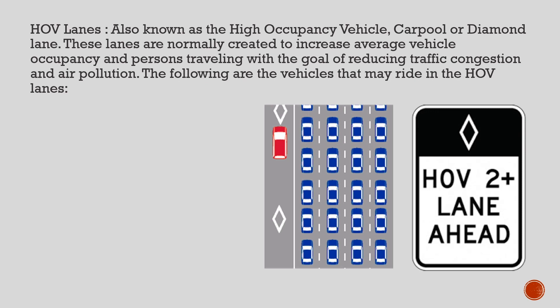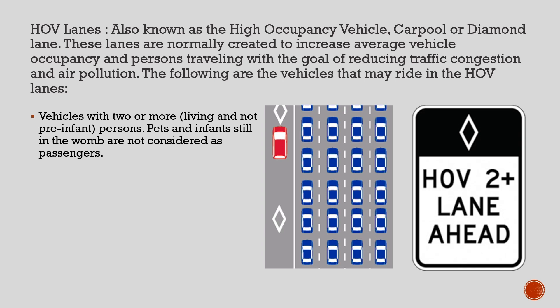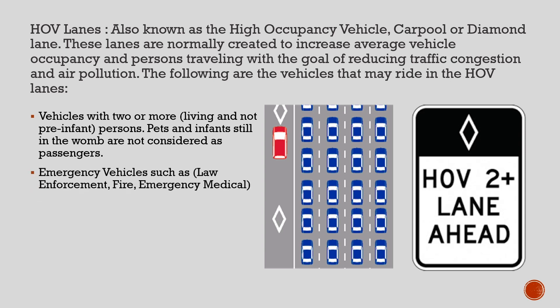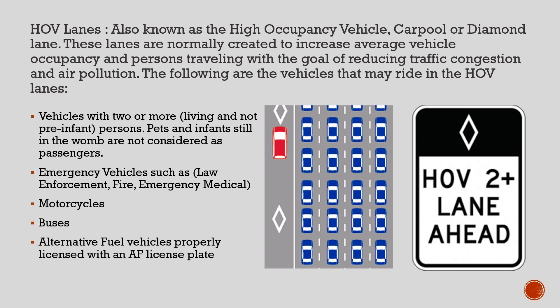HOV lanes, also known as High Occupancy Vehicle, Carpool, or Diamond Lanes, are normally created to increase average vehicle occupancy and reduce traffic congestion and air pollution. Vehicles that may ride in the HOV lanes include: vehicles with two or more persons (not including pets or infants still in the womb), emergency vehicles such as law enforcement, fire, and emergency medical, motorcycles, buses, and alternative fuel vehicles properly licensed with an AF license plate.